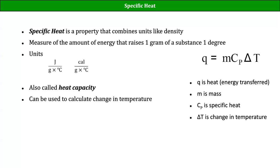Plugging in: negative 5.8 times 10 to the 2 joules equals 22.0 grams times c_p times negative 68.0 degrees Celsius. Divide both sides by the mass and by negative 68.0, and you get c_p equal to 0.388 joules per gram degree Celsius. The two negatives cancel — that's why the negative sign in q metal equals negative q water is so important, otherwise you'd get a negative specific heat, which doesn't make sense.